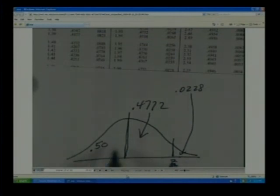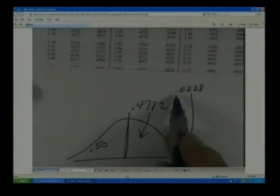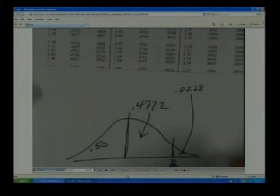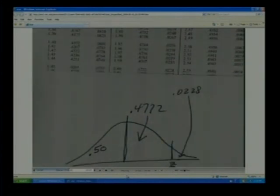So if we want to know the area beyond that value that we calculated, the probability of getting a value up beyond that value, it would be 0.0228 or 2.28 percent. That's how you use these tables.